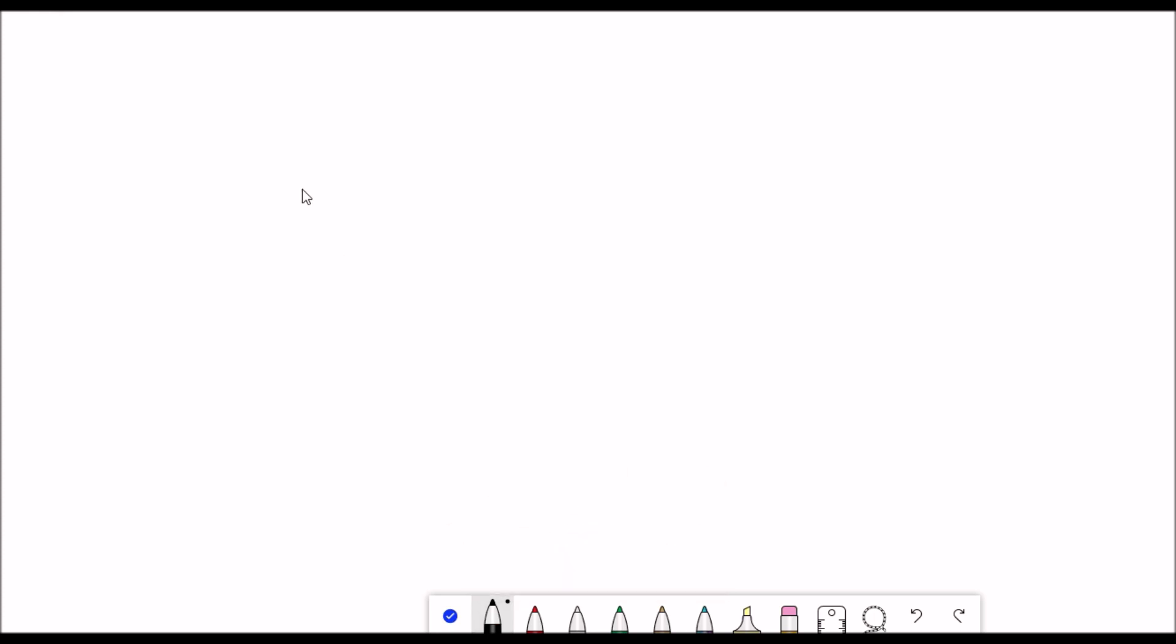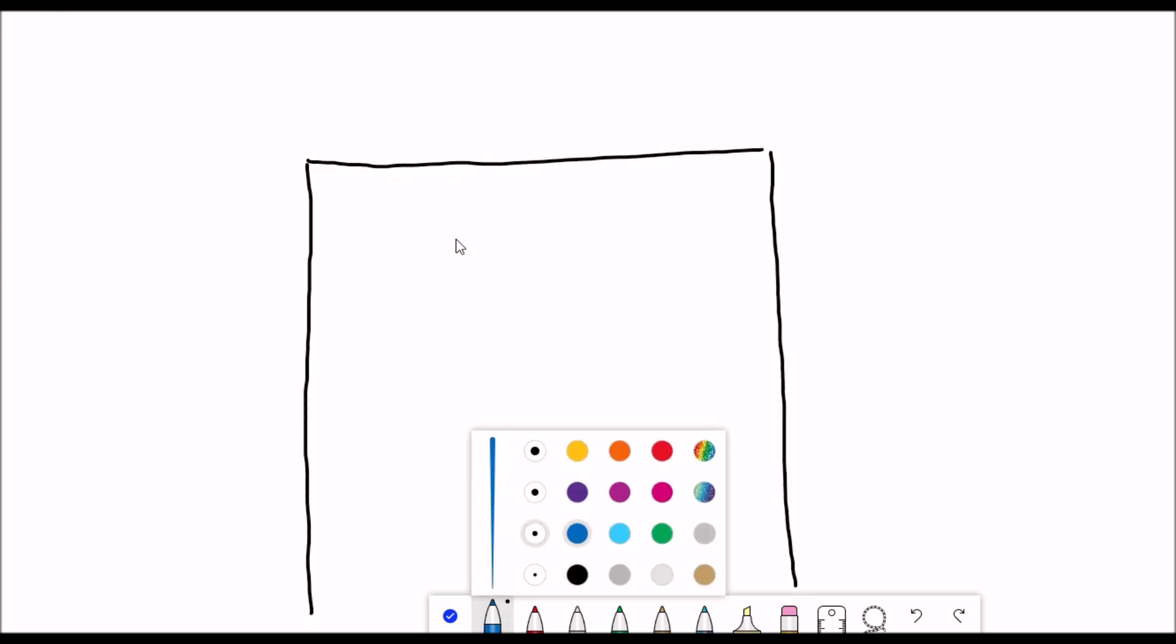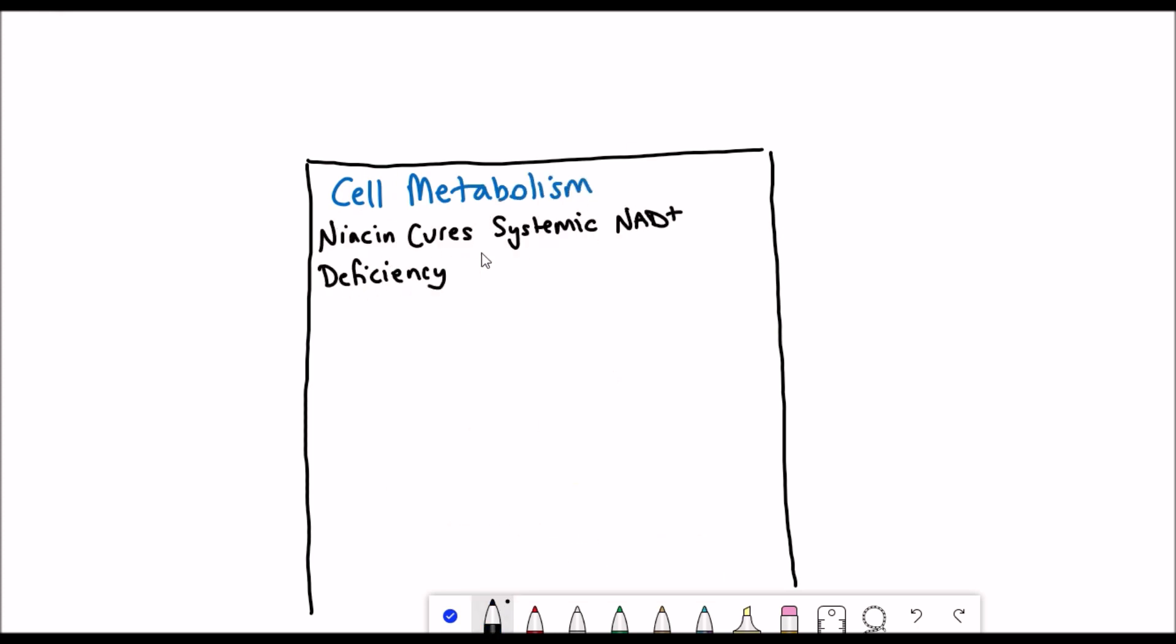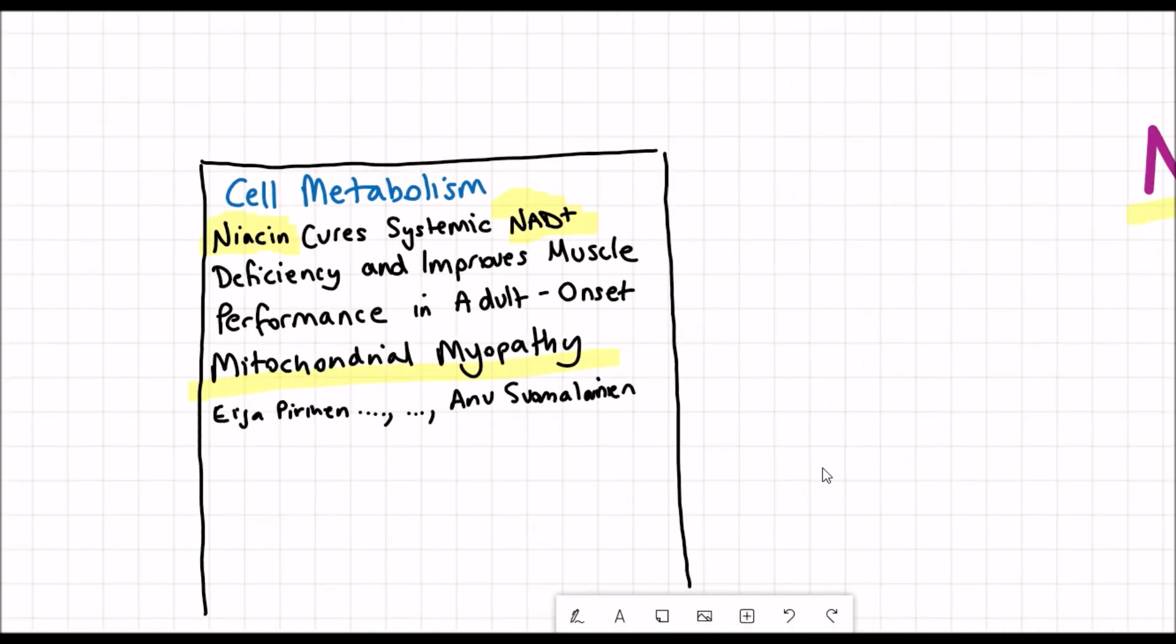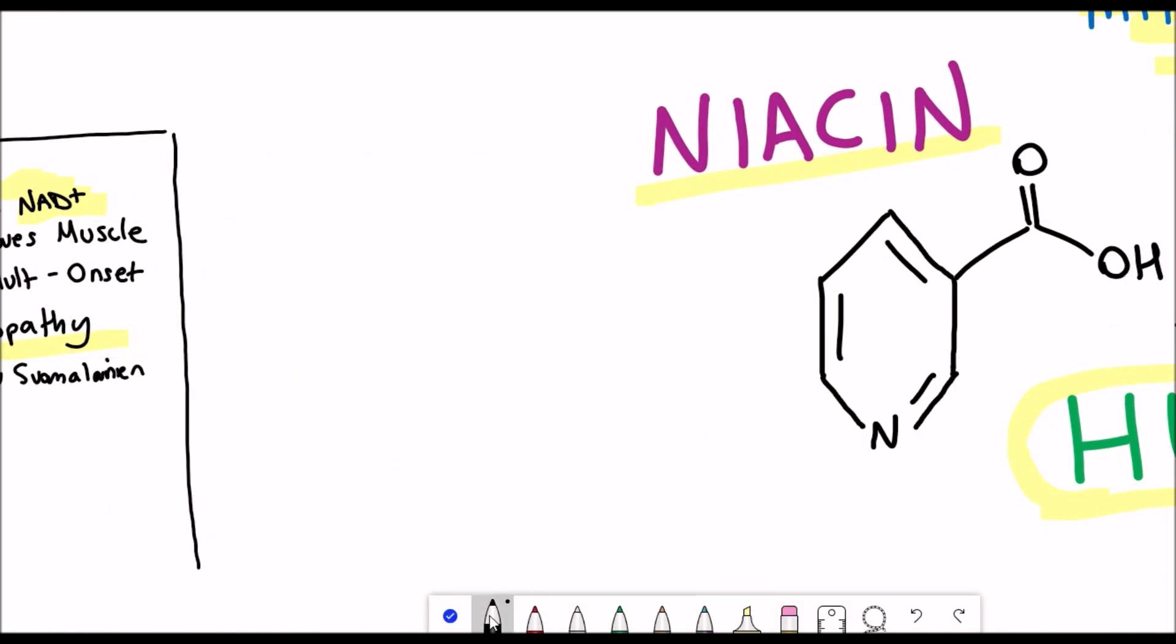So I'll discuss what all of those different terms mean and discuss their data. This data was recently published in the Cell Metabolism paper that came out just the other day and is titled Niacin Cures Systemic NAD Plus Deficiency and Improves Muscle Performance in Adult Onset Mitochondrial Myopathy. Before I go into the results that they saw and some of the side effects of the study I'll just explain what some of these terms mean.